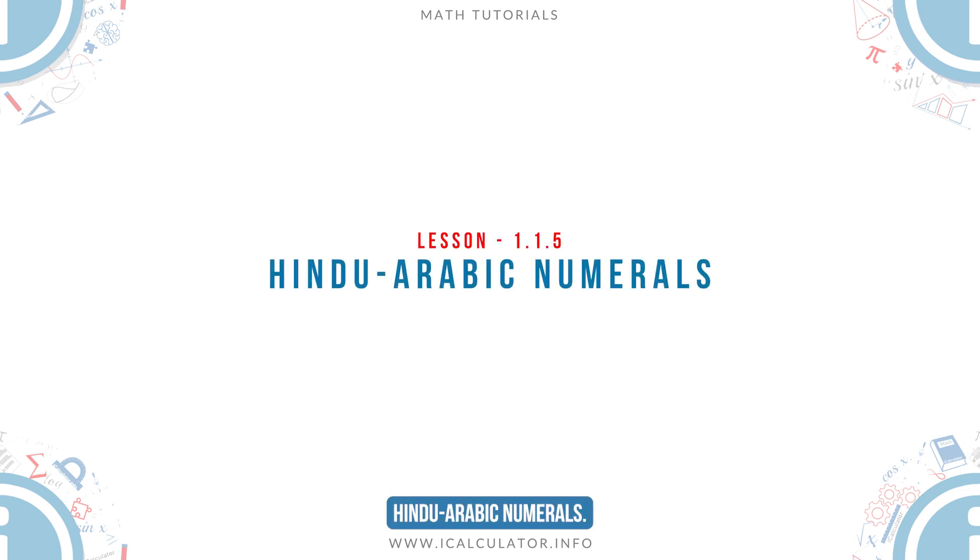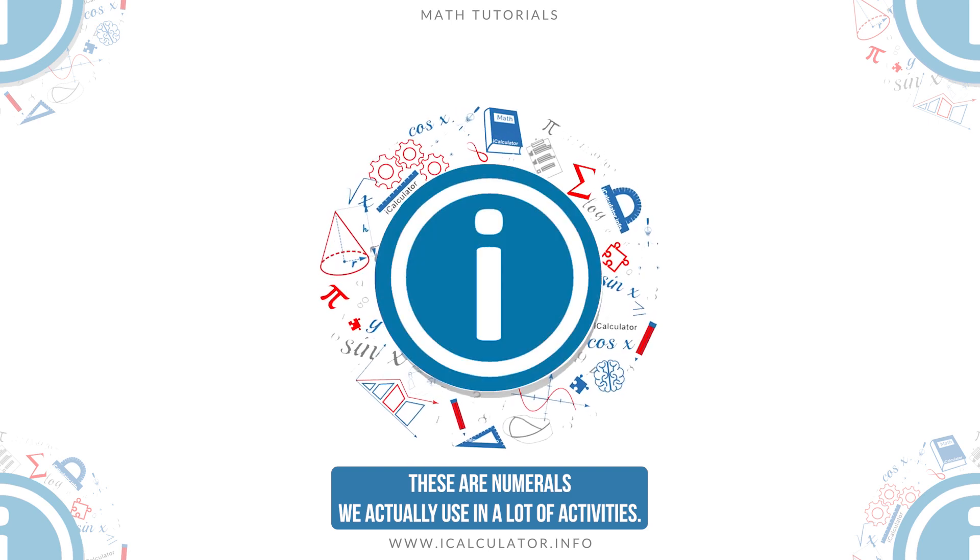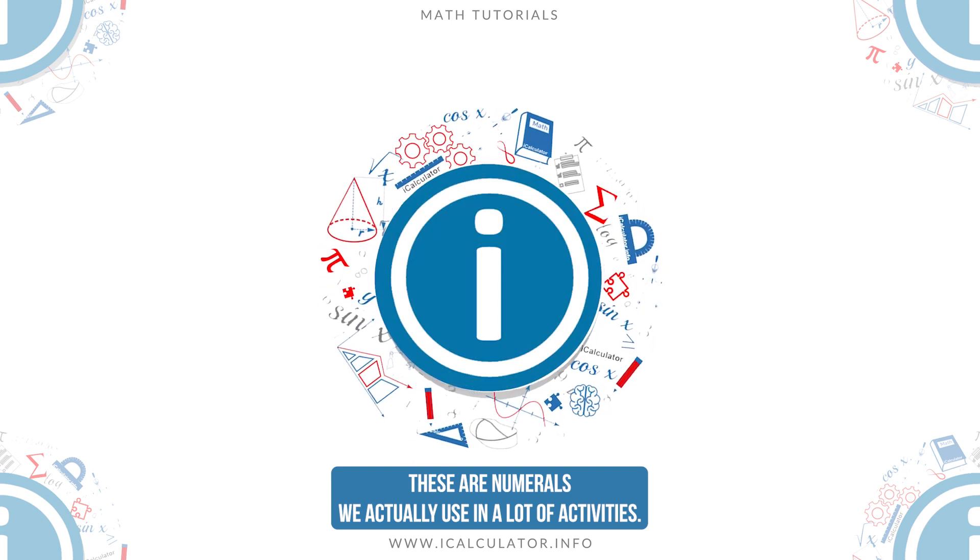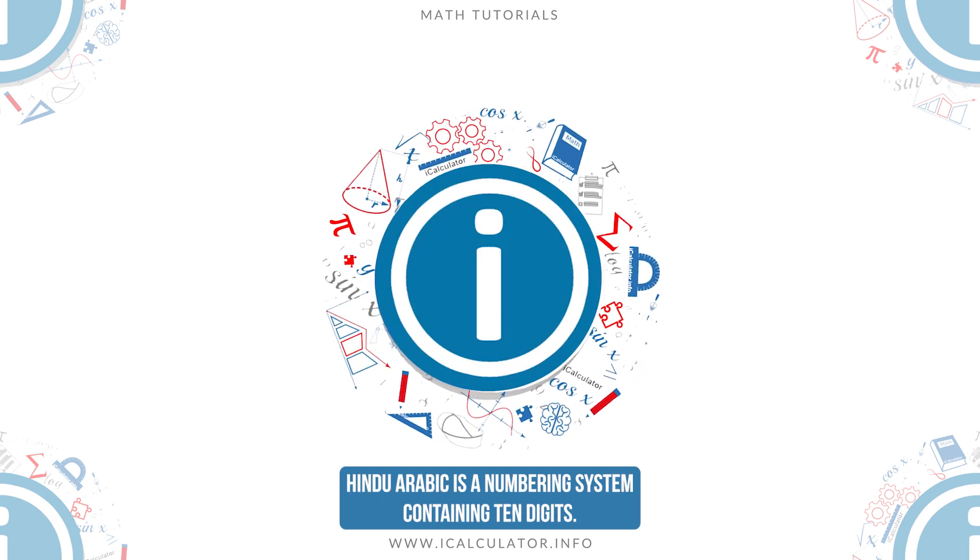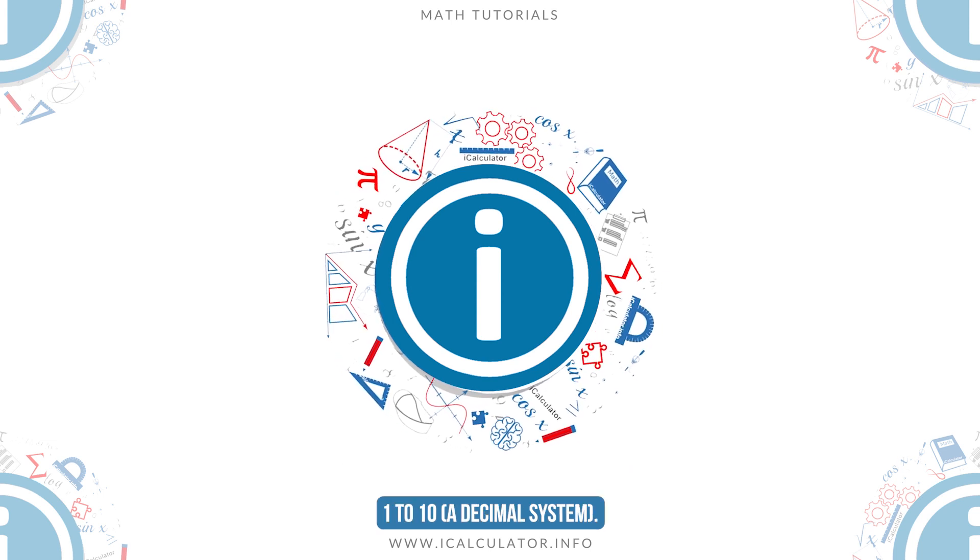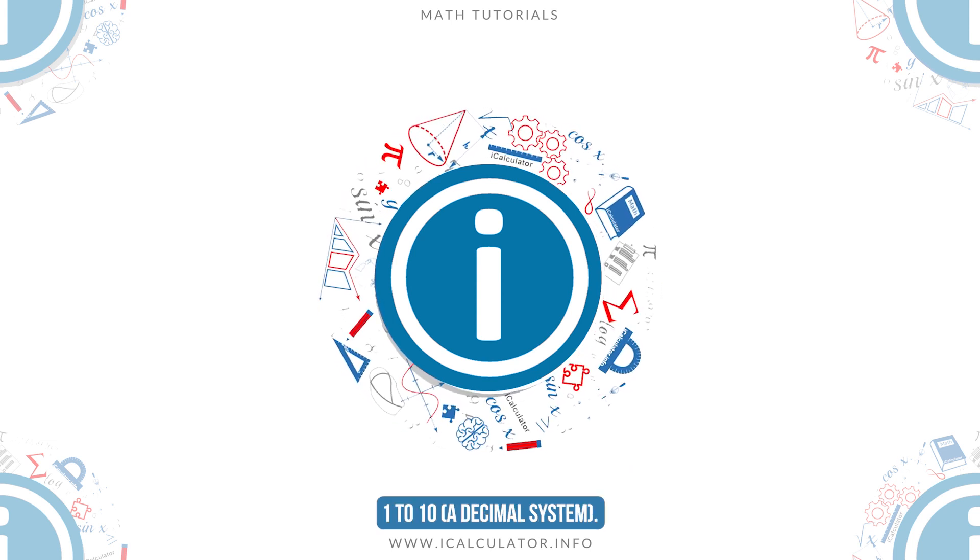Hindu-Arabic Numerals. These are numerals we actually use in a lot of activities. Hindu-Arabic is a numbering system containing 10 digits, 1 to 10. A decimal system.